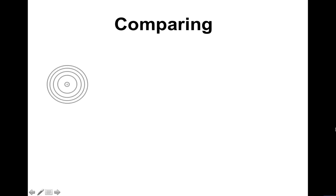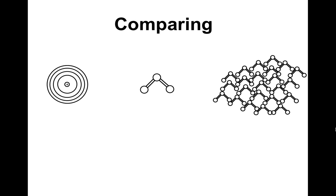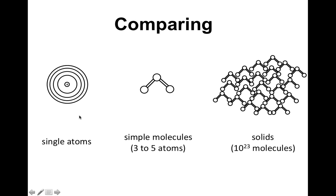In this video, we're going to compare single atoms, molecules, and solids, which have lots and lots of molecules in them. So here's a single atom. This molecule has three to five atoms bonded together, and the solid here has a ton of molecules.